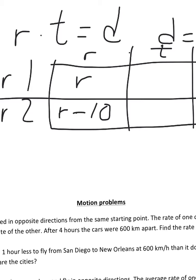after four hours, the cars were 600 kilometers apart. All right. So we know for both of these, we were traveling for four hours. We also know that they were going in opposite directions.